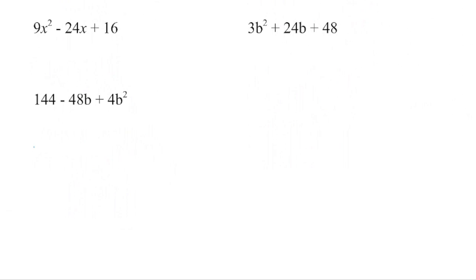For the last three examples, the process is quick. This is a perfect square: square root gives 3, square root gives 4. 3 times 4 is 12, doubled is 24 — that matches the middle term, so this is a perfect square trinomial. Square root the first term to get 3x, square root the last term to get 4, and the sign matches the middle term. Checking: square 3x for 9x squared, double the product — negative 4 times 3x is negative 12x, times 2 is negative 24x — and square the last term to get positive 16.